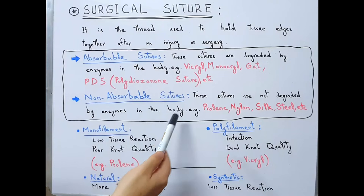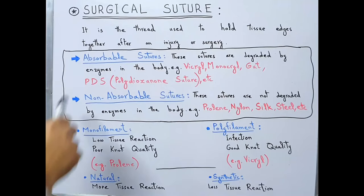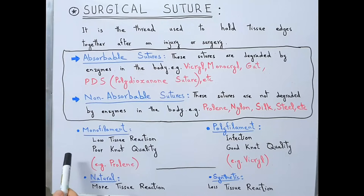On the other hand, non-absorbable sutures are not degraded by enzymes in the body. Examples are Prolene, nylon, silk, steel, etc. This is the major classification system of surgical sutures.